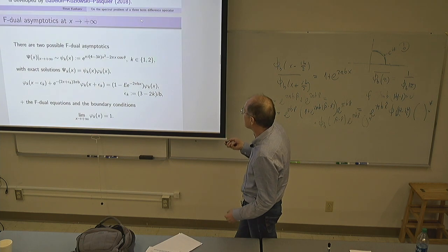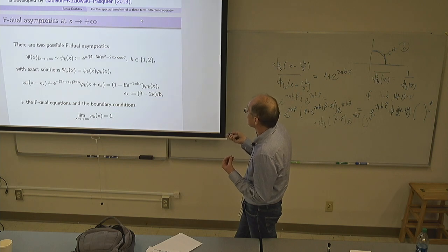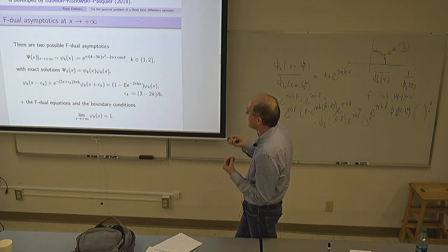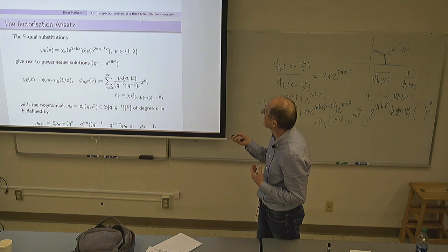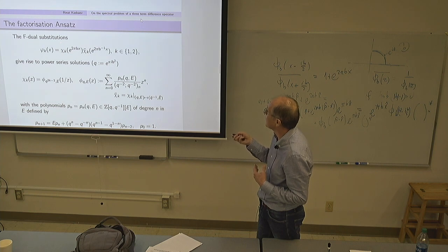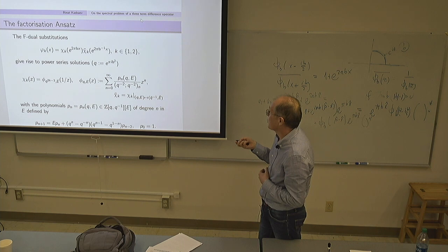We can solve the two equations simultaneously. The coefficients depend only on exponentials of x with parameters b, so it is natural to look for φ_k(x) as a power series in those exponentials, and for the dual sector we invert b. The answer is to try the product of two unknown functions: χ_k of one exponential times χ̄_k of another. Using the variable q inside the unit disc, we construct two power series solutions, which I denote φ_{q,E}.